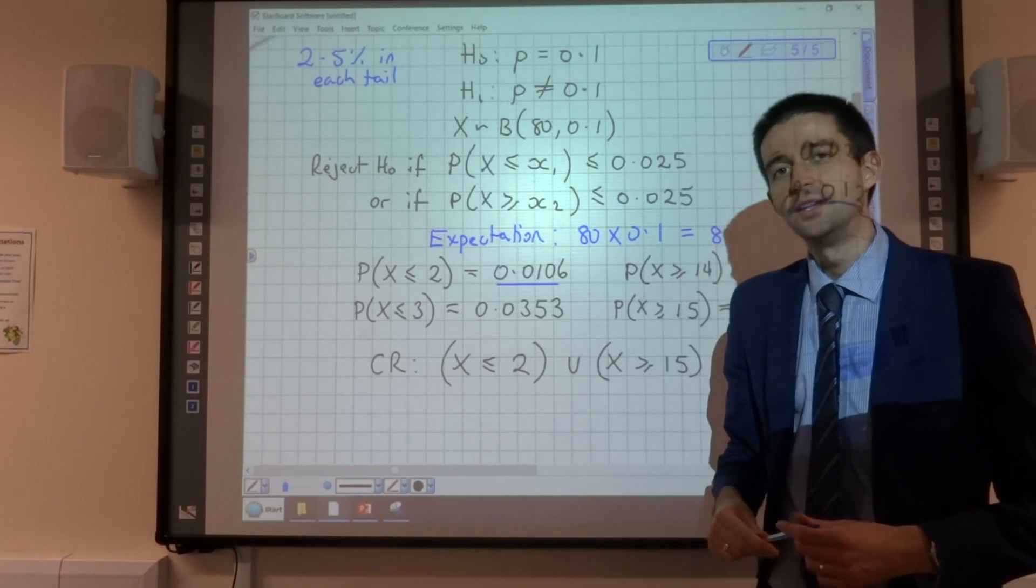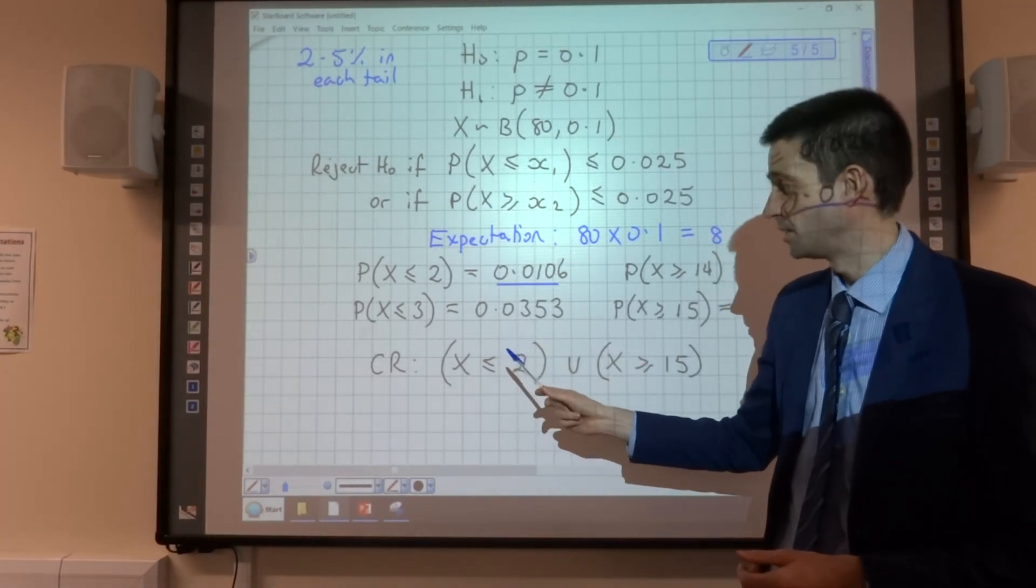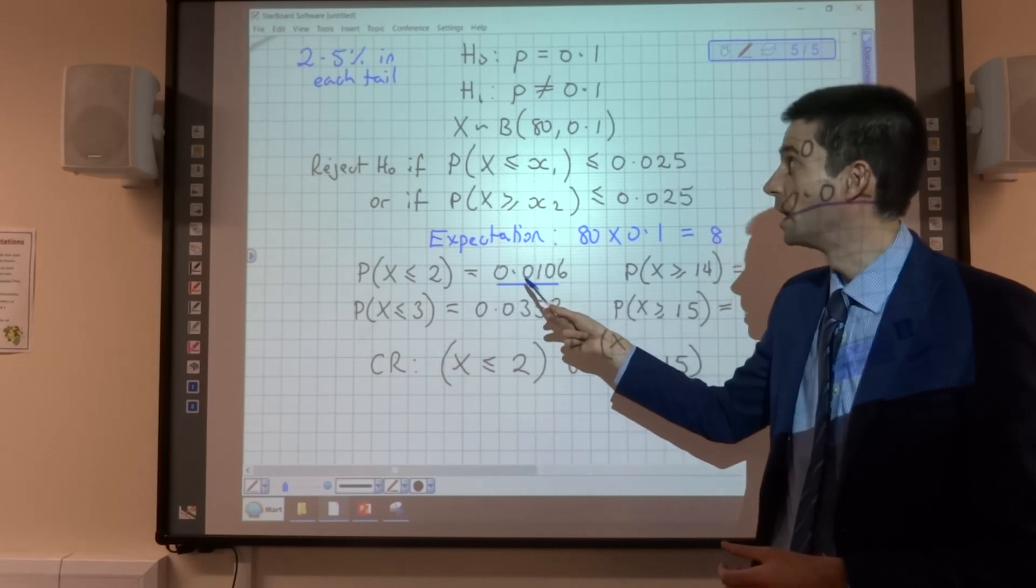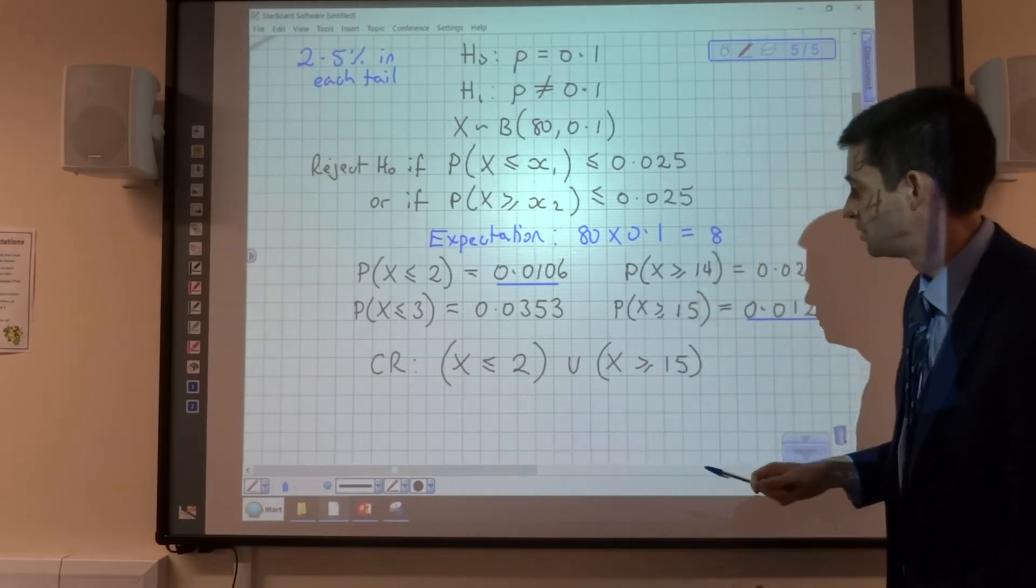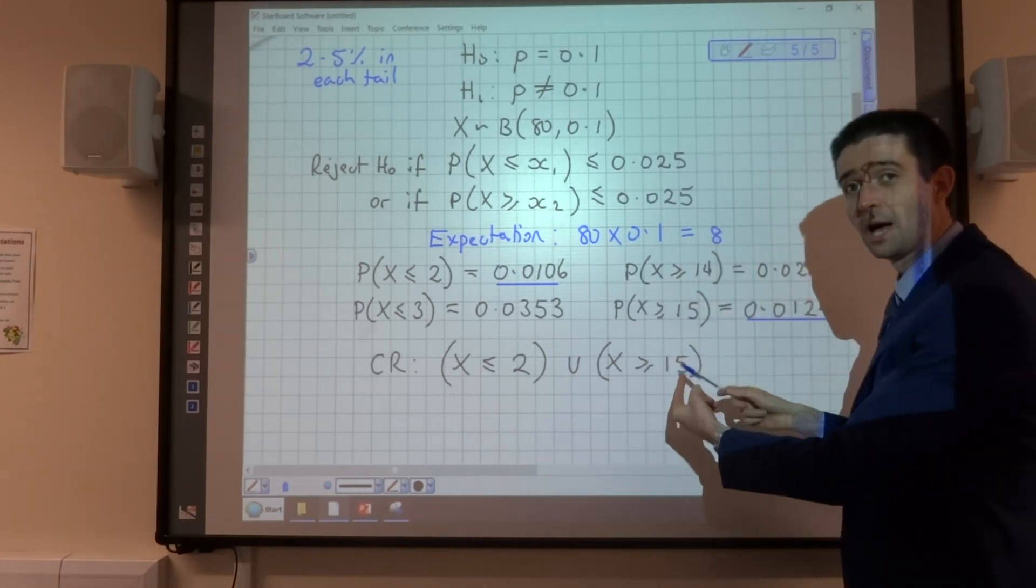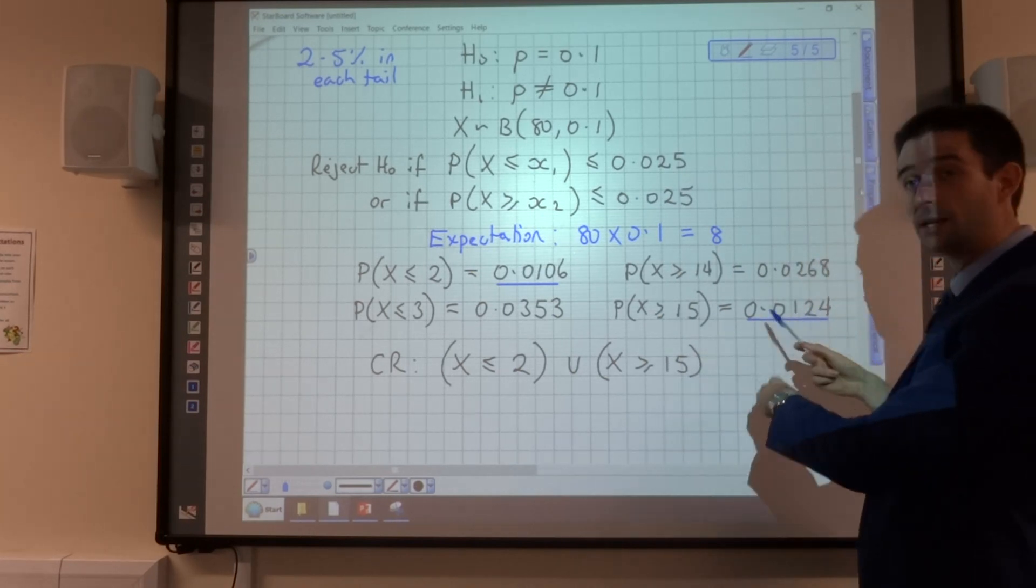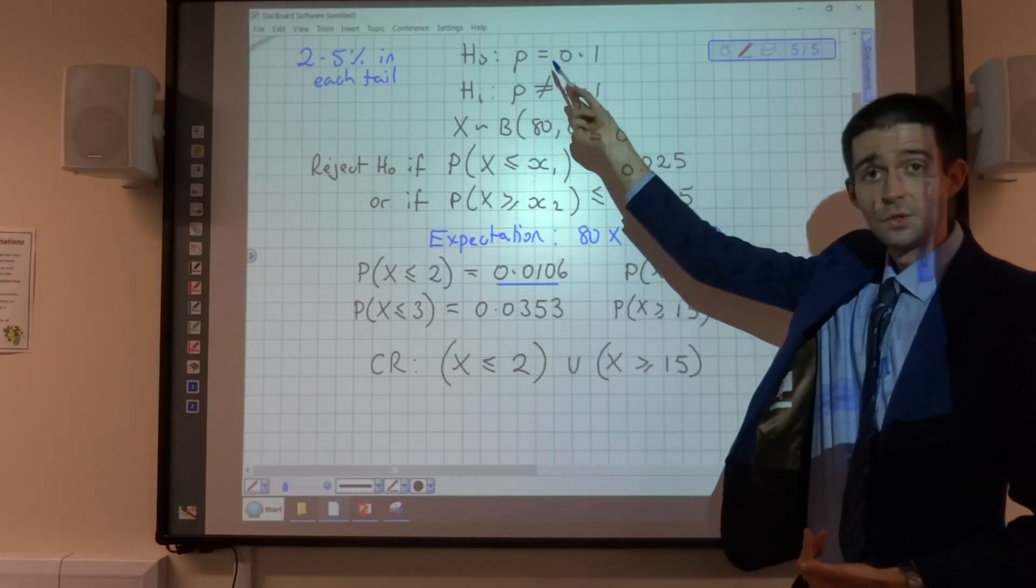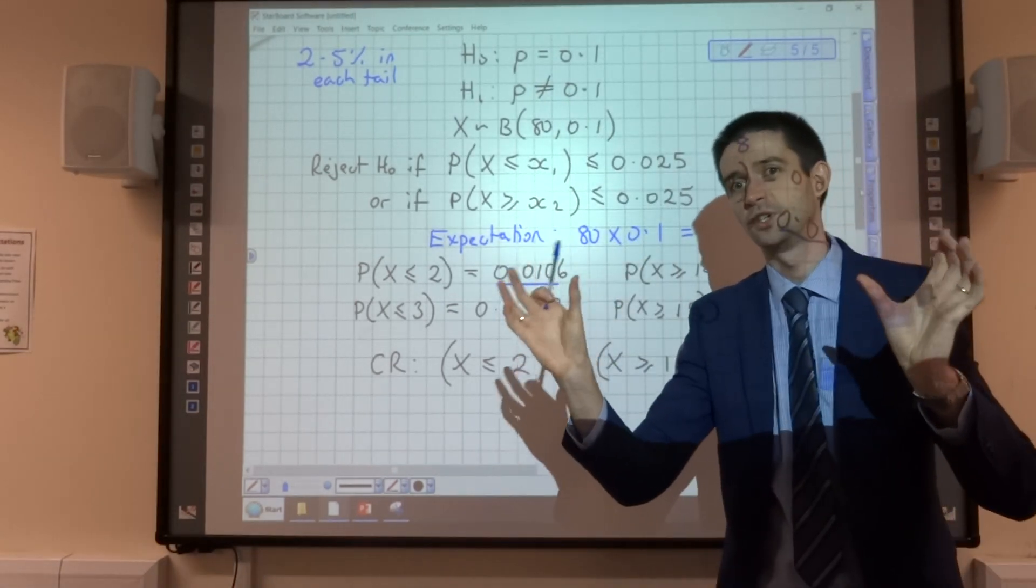So what that means is that if 2 or fewer people out of the 80 were left-handed, the chance of that happening is low enough that I doubt 0.1, and I think it's lower. Similarly, if 15 or more out of the 80 people are left-handed, that's sufficiently unlikely that it makes me doubt the value 0.1, and I would think that it's higher. So two-tailed critical region.